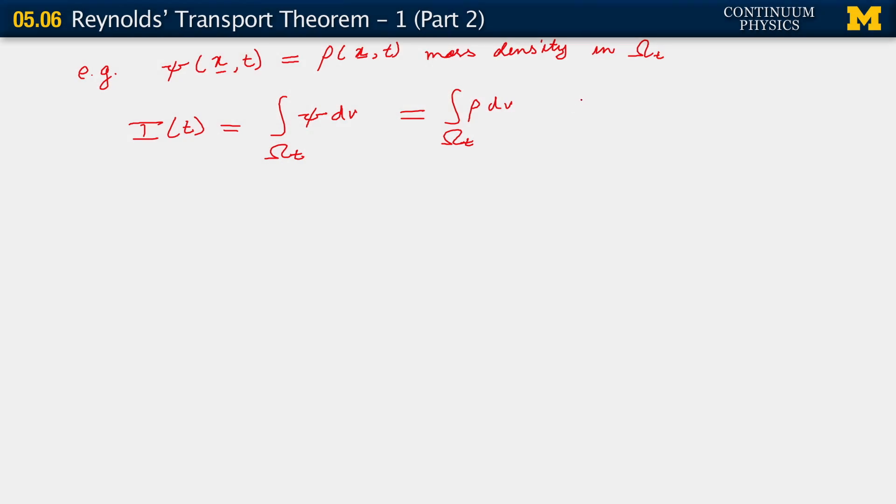So the body starts out in its reference configuration, it deforms, goes into a current configuration, and there's some deformation. But a point we made very early on is that in our treatment of continuum mechanics, if we are ignoring chemistry and some transport processes, mass is fixed. So that's the quantity we're trying to evaluate here. We're asking, what happens if we choose psi to be the mass density? What's happening to this quantity I? We observe that this is just the total mass.